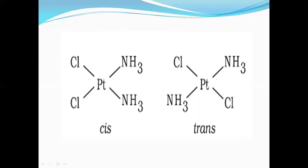For example, consider the MX2L2 complex — platinum dichloride diamine. Two complexes with the same molecular formula and the same structural formula (square planar geometry) differ only in the spatial arrangement of chloride or amine ligands. Here, two chlorides are on the same side (adjacent), so it is called cis. When they are on opposite sides, it is called trans. This is geometrical isomerism — same molecular formula, same structural formula, but different arrangement of ligands.